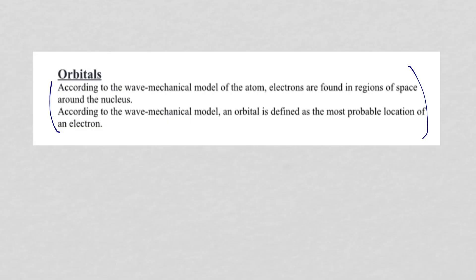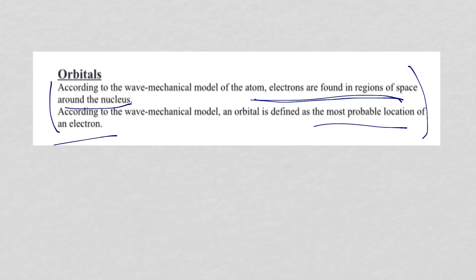From the January 2019 and three prior exams, you'll see that in two of the four exams you need to know what orbitals are. Orbitals are found in regions of space around the nucleus, and they represent the most probable location for an electron. Orbitals tie into the wave mechanical model of atomic structure. Make sure you know orbitals.